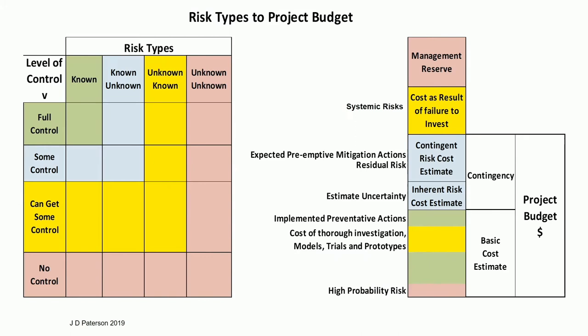I have a chart here showing risk types against project budget. The risk types include unknown unknowns in yellow and the unknown knowns. Here's the level of control: you can get full control, some control if you make the effort, and no control.